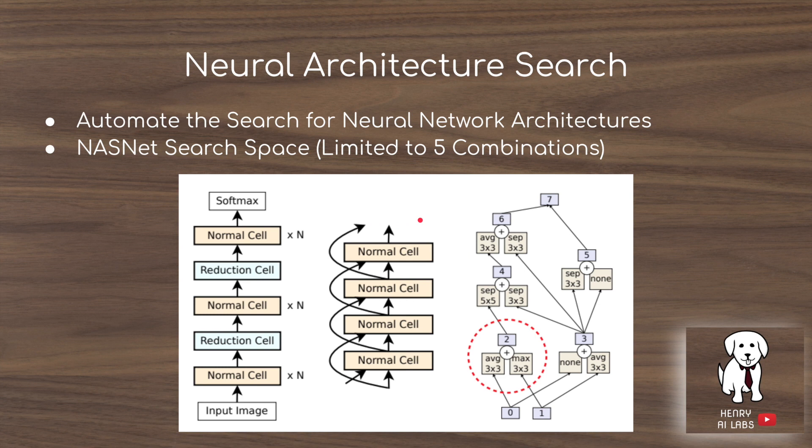Neural Architecture Search is the idea of parameterizing the space of all possible neural network architectures — within reason — designing a pretty exhaustive search space that can find things like ResNext, Inception, and DenseNet, and then make modifications that might invent some new neural network.